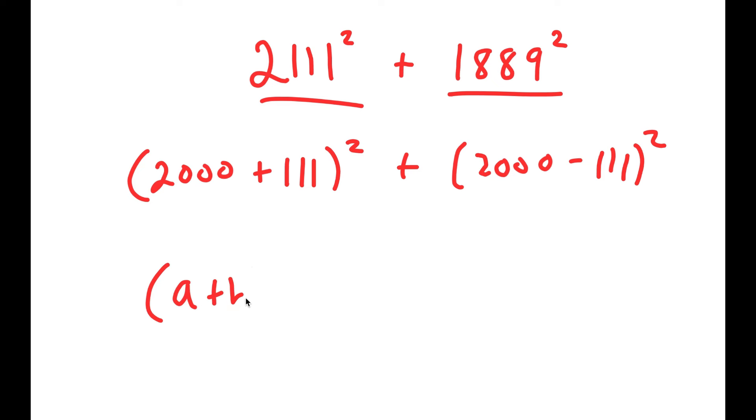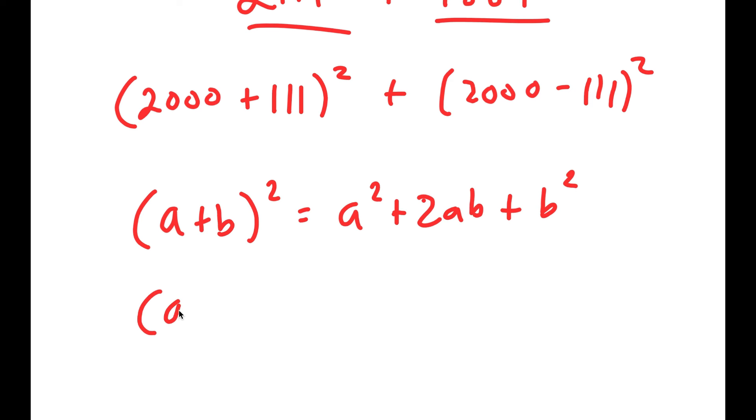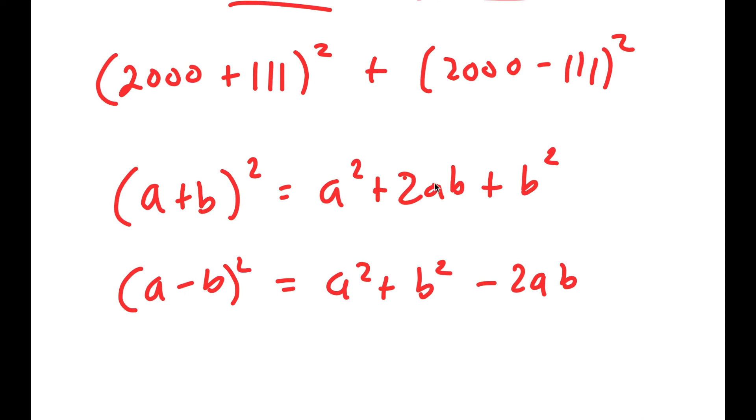If I have something in the form (a+b)², this is equal to a² + 2ab + b². And if I have something in the form (a-b)², this is equal to a² + b² - 2ab. So if I add these two together,